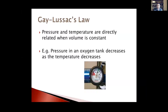Gay-Lussac's Law: pressure and temperature are directly related when volume is constant. Practical example: you check an oxygen cylinder at 5 PM on a hot day — it reads 1,900 PSI, full. The next morning the crew finds it at 1,800 PSI. This isn't necessarily a leak — overnight temperatures dropped 10 to 15 degrees, which directly caused the pressure decrease per Gay-Lussac's Law.